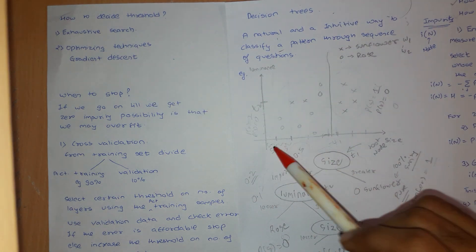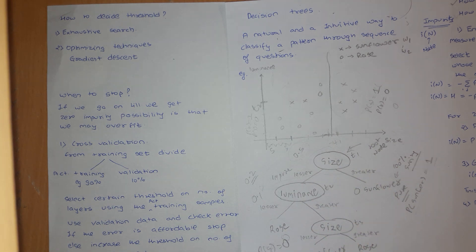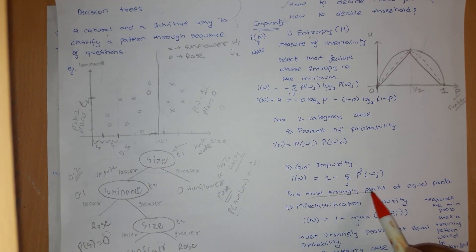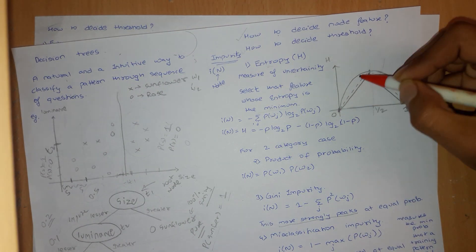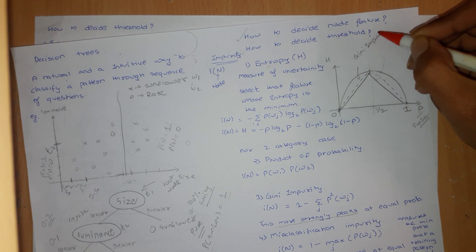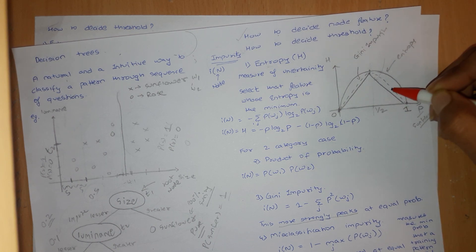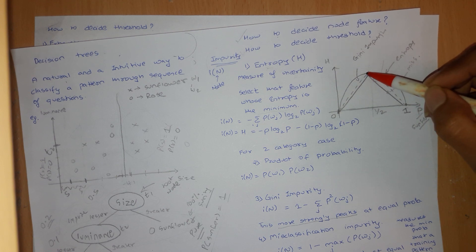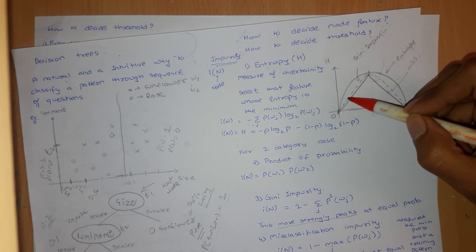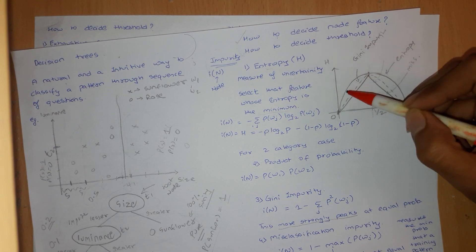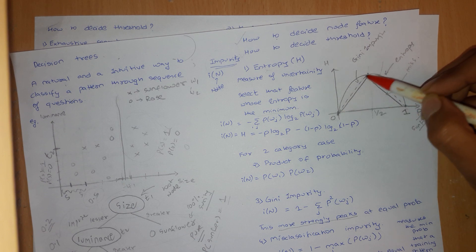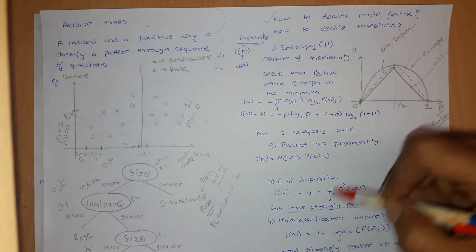Using optimization techniques such as gradient descent, you get a threshold value that gives minimum impurity. Also, the dotted line shown here is the Gini impurity curve, and this other curve is entropy, and this is misclassification. The Gini impurity is a continuous curve with a steeper slope than entropy, so gradient descent algorithms converge faster using Gini impurity — that is why we introduce it.